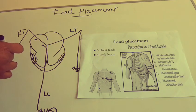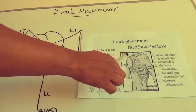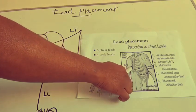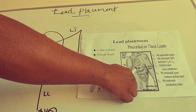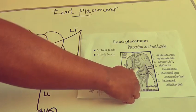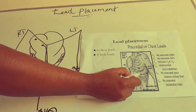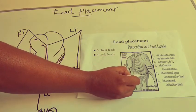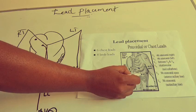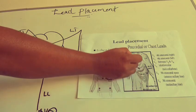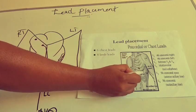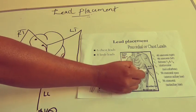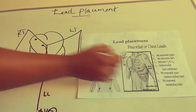Now for chest leads: V1 is placed on the right side of the sternum in the fourth intercostal space. V2 is in the fourth intercostal space on the left side. V3 is in between V2 and V4. V4 is at the mid-clavicular line in the fifth intercostal space. V5 is at the anterior axillary line in the fifth intercostal space. V6 is at the mid-axillary line in the fifth intercostal space.